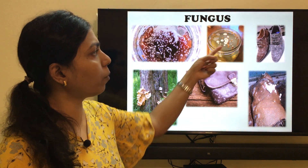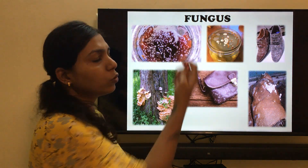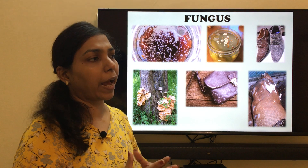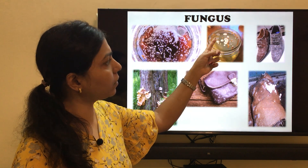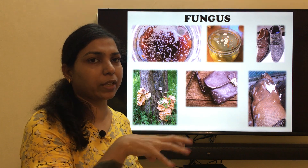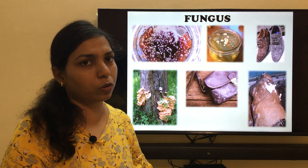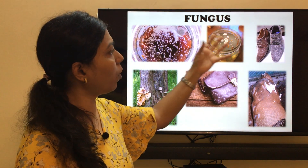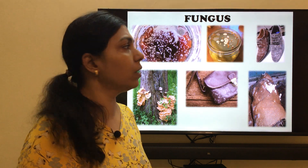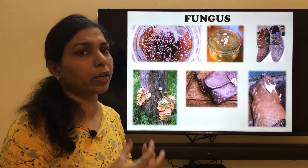Usually what we do is take a spoon, scoop out that top layer, throw it out, and happily enjoy the jam or pickles. But for your information, those white floating things are actually fungus. Just removing that floating layer and consuming the remaining pickle or jam is absolutely not good for health, because the spores of the fungus are already present inside, and the rhizoids of the fungus have already grown into the pickles and jams.